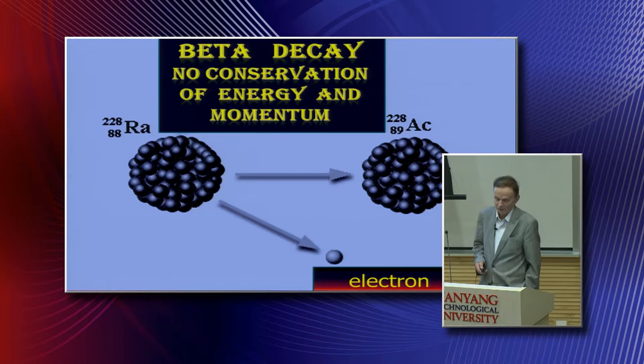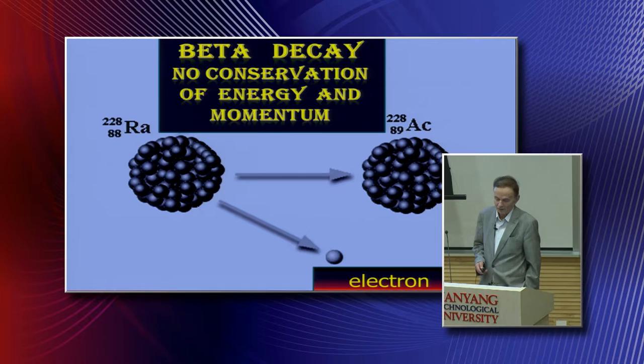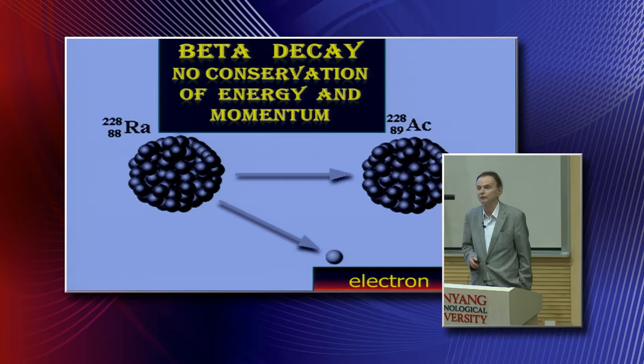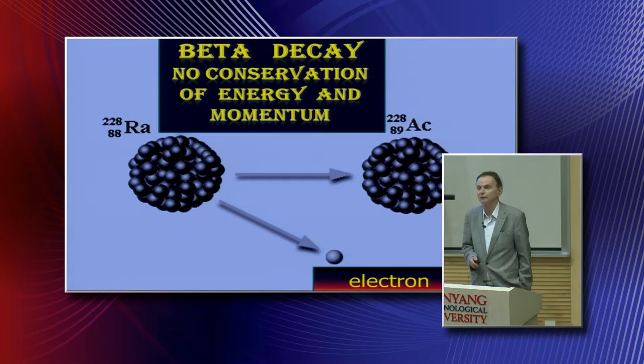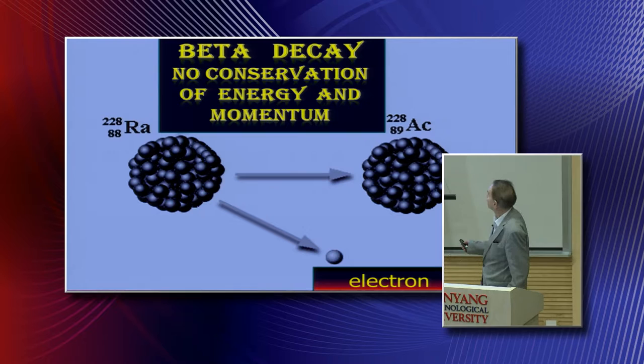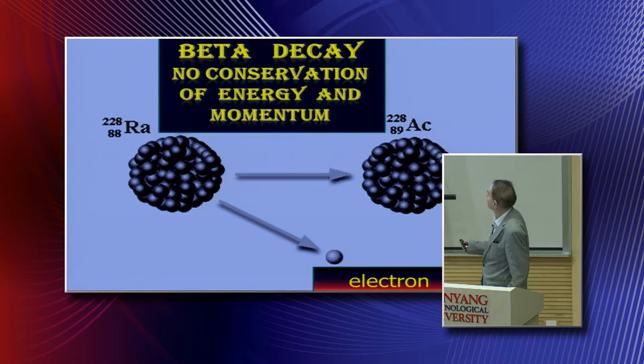But let me now return to neutrinos, which is also related to Salam. As you well know, at the beginning of the last century, one observed that in particular in beta decay, the energy and also the momentum is not conserved, like here in this decay of radium decaying into actinium and the electron - there was always missing energy and momentum.